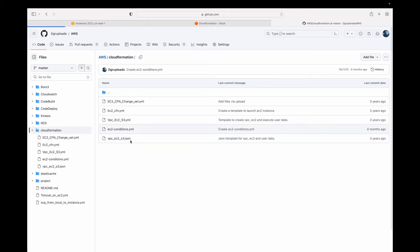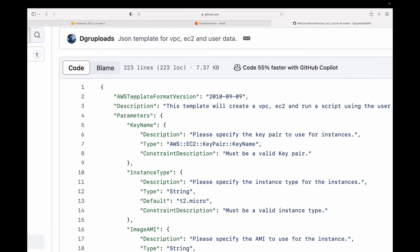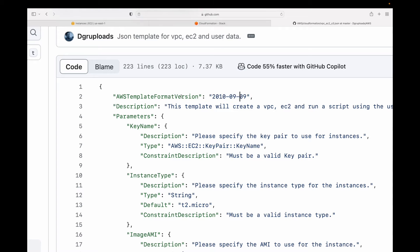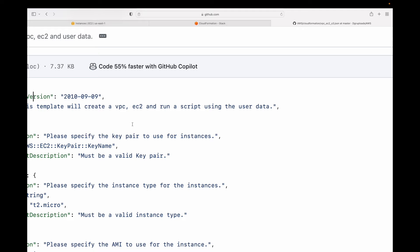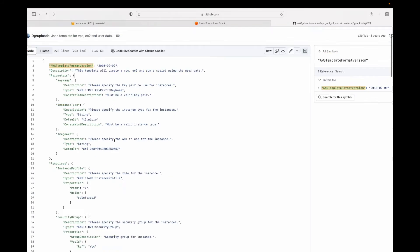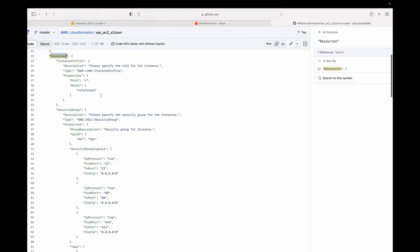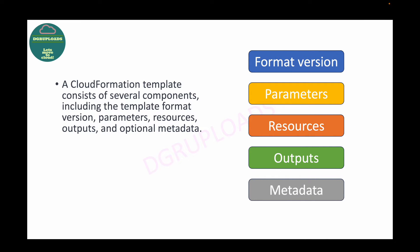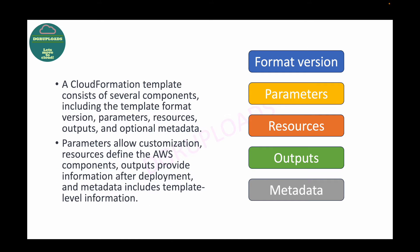For example, looking at a JSON script, you have the FormatVersion, the Parameters section, and the Resources section. Likewise, we also have Outputs and Metadata. Parameters allow customization of your resources; the Resource block defines the components you want to create; Outputs provides information about the resources created after deployment; and Metadata includes template-level information.